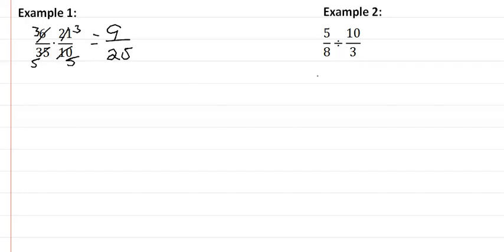In our second example, we want to rewrite as a multiplication problem. So we have 5 8ths times 3 10ths. Again, we're looking for common factors. I see that we have a common factor of 5 and now we'll multiply and we'll get 3 16ths. No common factors in my answer.